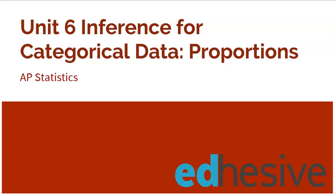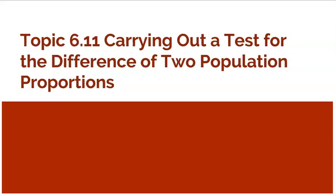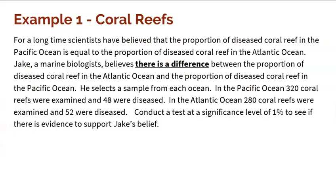Welcome to Unit 6, Inference for Categorical Data with an emphasis on proportions. This is topic 6.11, carrying out a test for the difference of two population proportions. Hopefully we've learned all the different steps we've got to go through, and now we're ready to put it into motion. In this video, we're going to look at two examples.